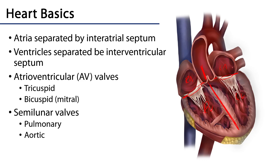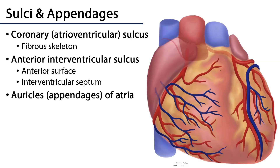There are also semilunar valves — the aortic is demonstrated here, but there's also a pulmonary valve — that are part of this fibrous skeleton and anchored in there. So as we look to the surface of the heart, we'll see a few sulci and appendages that are associated with these deeper structures.